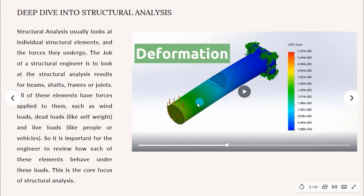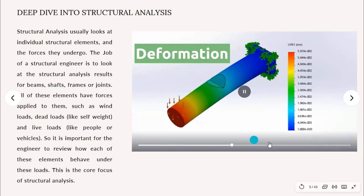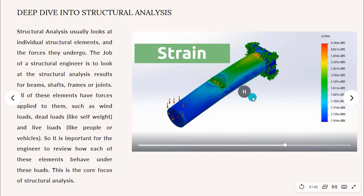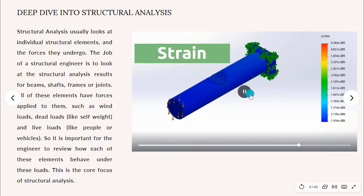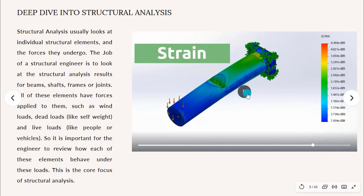Moving forward in the video, we can see the deformation analysis. This edge is more displaced than the fixed portion of the shaft, corresponding to the color band. We can also see the strain analysis — the red portion indicates much higher strain, while the blue portion indicates much lower strain.